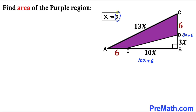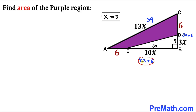Since x equals 3: 13x becomes 13 times 3, which is 39. 10x becomes 10 times 3, which is 30. 3x becomes 3 times 3, which is 9. 10x plus 6 becomes 30 plus 6, which is 36. And 3x plus 6 becomes 9 plus 6, which is 15.